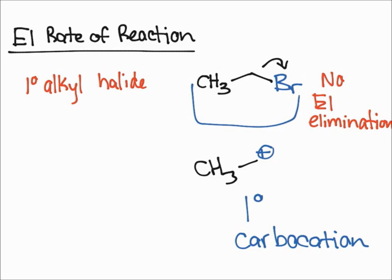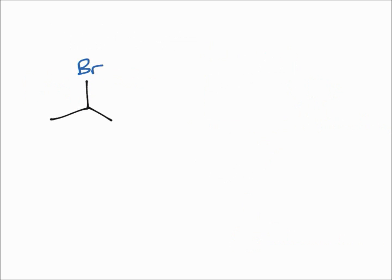We'll just use this molecule for example. When this molecule undergoes a reaction it's going to form a secondary carbocation because the bromine is going to leave.